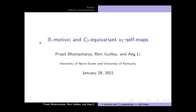It is my pleasure to introduce Bert Giu, who will be telling us about motivic and C2 equivariant V1 self-maps. Thanks for the invitation to speak. I want to talk about these V1 self-maps in the motivic and equivariant categories. This is joint work with Prasid Bhattacharya and Ong Lee, who are both on the job market this year, so I encourage you to give their applications full consideration.